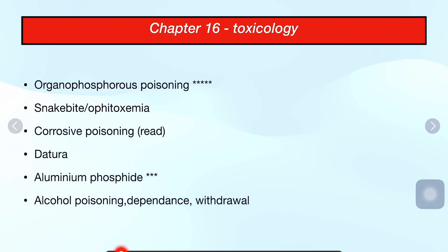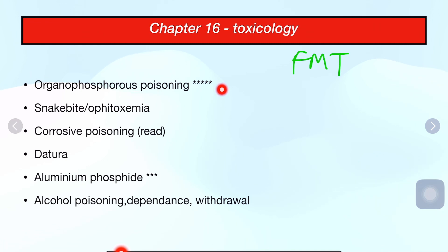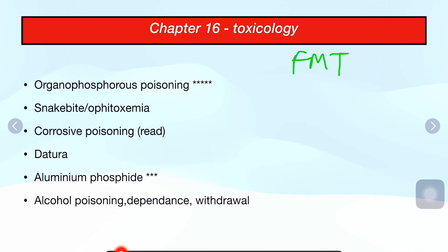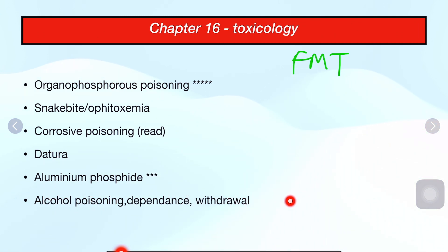Then comes Chapter 16, Toxicology. Integrate it with FMT. There are mnemonics given in Bismas. Organophosphorous poisoning is the most important poisoning in this chapter — it presents with garlic odor and is related to insecticides and pesticides. Other important topics include aluminum phosphide, snake bite, corrosive poisoning, Datura poisoning, and alcohol poisoning, dependence, and withdrawal.